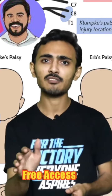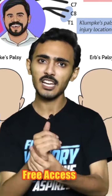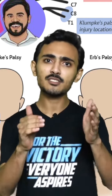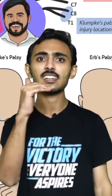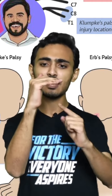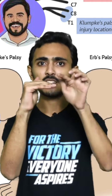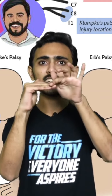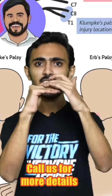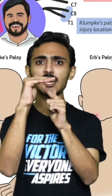C8T1 is the supply of the intrinsic muscles of the hand, especially the lumbricals. The lumbricals' intrinsic function is flexion at the metacarpophalangeal joint and extension at the interphalangeal joint.